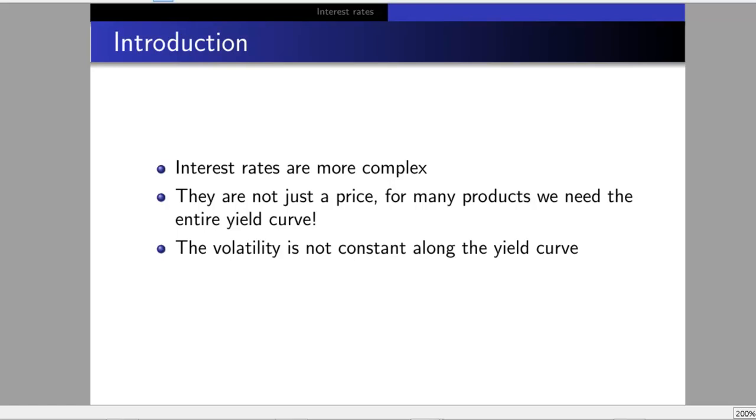The volatility is also not constant along the yield curve. The two-year point moves up and down in a certain way, but the five-year point moves differently. How do you capture all of that?